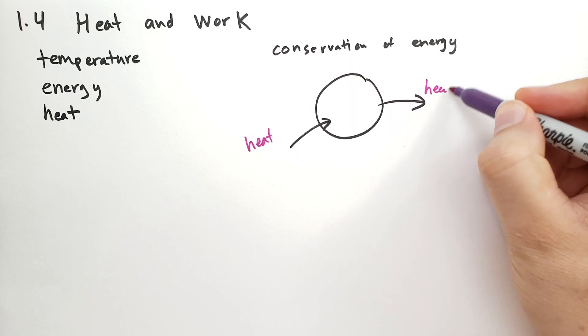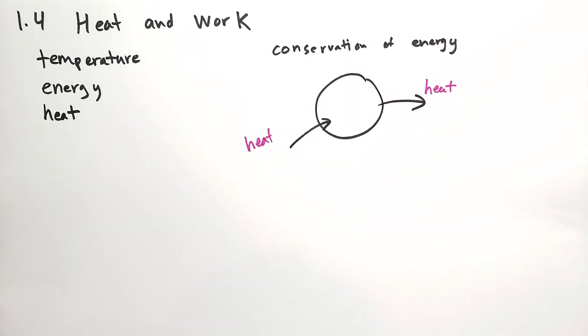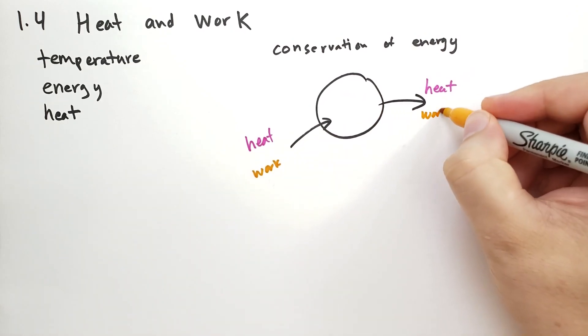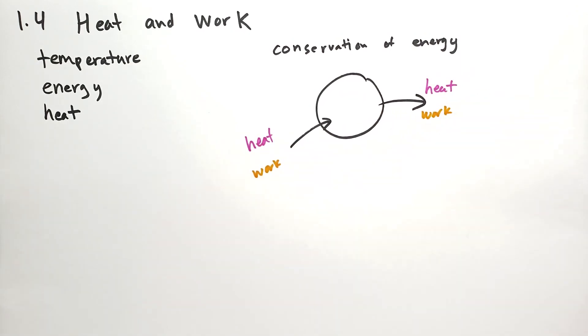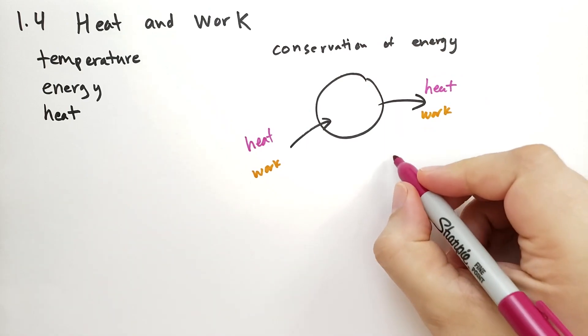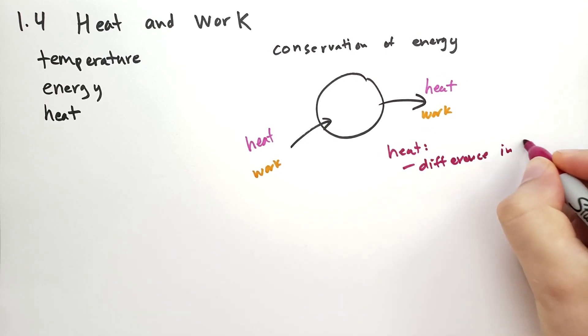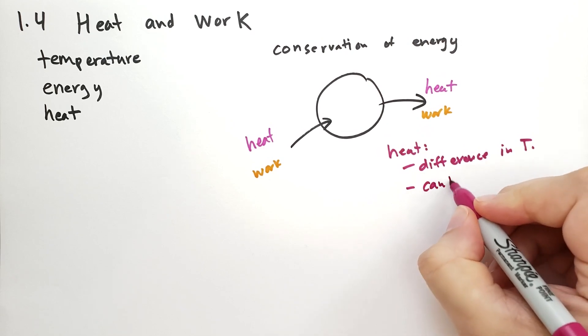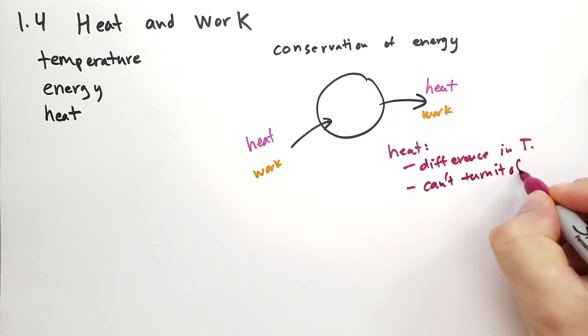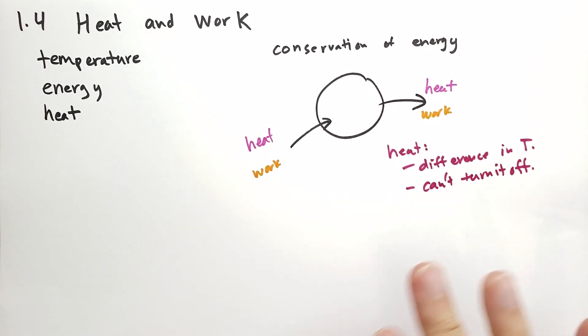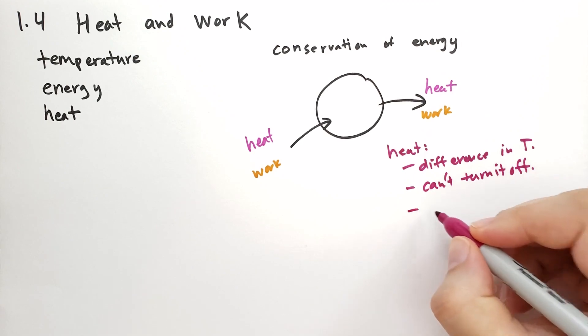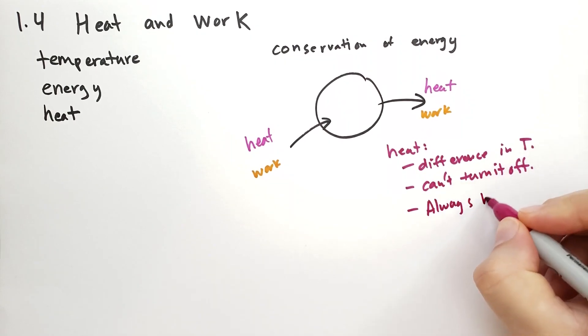One kind of energy we call heat. And the other kind of energy we're going to call work. And for students of thermodynamics, especially new students, this seems like an arbitrary and almost meaningless distinction, but it's very important. The heat energy, this is energy that is due to the difference in temperature. So heat comes from the difference in temperature. And you can't turn it off. At best, you can just insulate the two systems from each other so the heat doesn't transfer. And heat always flows from hot to cold.